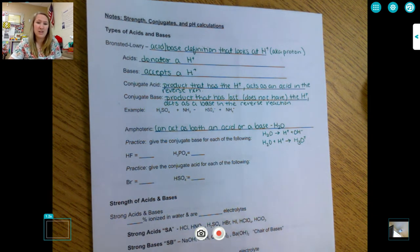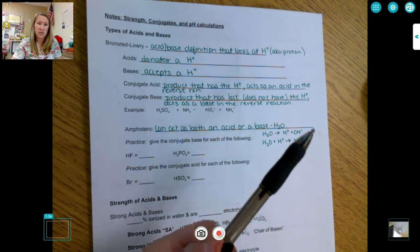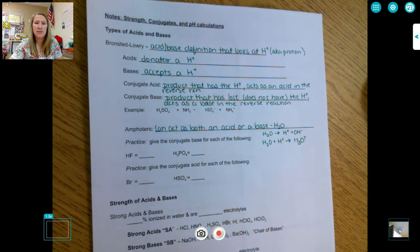Similarly, we can have a conjugate base. This is the product that no longer has the hydrogen ion, and again, if we were to go in the reverse direction, it would act as a base in that direction.